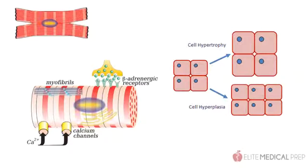The cells hypertrophy, which is distinctly different from cell hyperplasia, which is an increase in the number of cells. Remember that for the most part, the heart does not grow new cardiac myocytes, just like the brain does not grow new neurons.